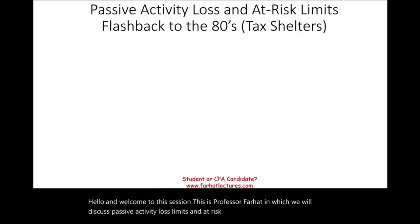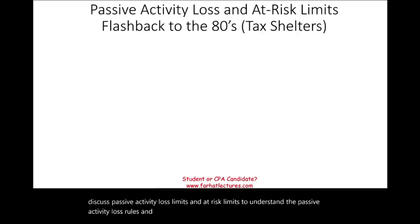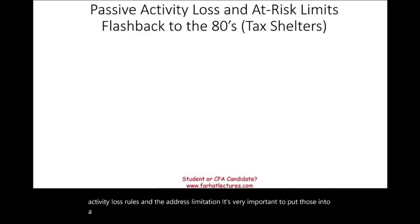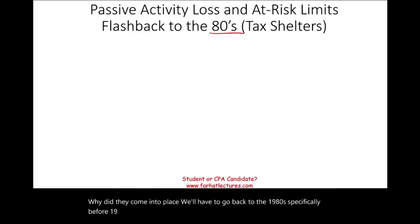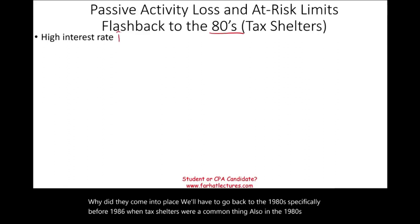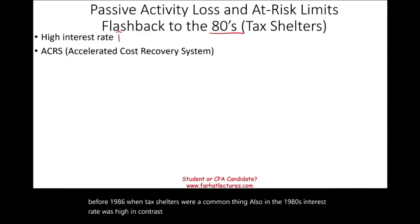To understand the passive activity loss rules and the at-risk limitation, it's very important to put those into a historical context. Why did they come into place? We'll have to go back to the 1980s, specifically before 1986 when tax shelters were a common thing. Also in the 1980s, interest rates were high, and we had something called ACRS — Accelerated Cost Recovery System. It's a depreciation method, and it's called ACRS for a reason: it's accelerated.